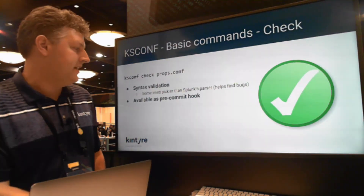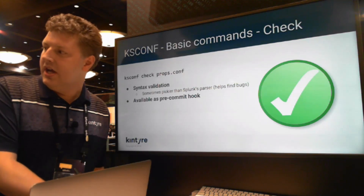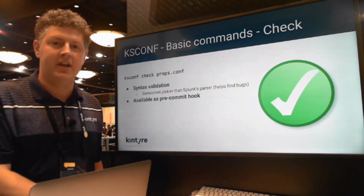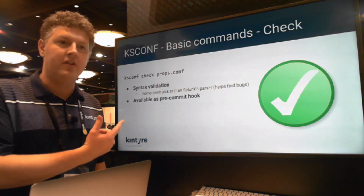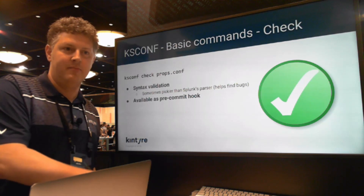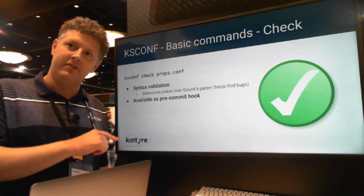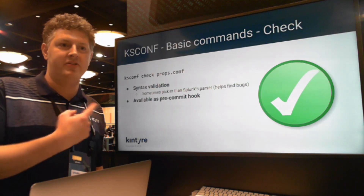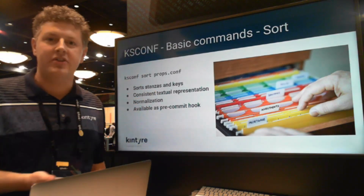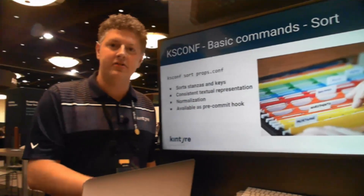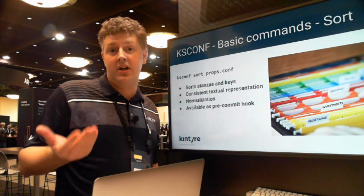We also have a basic check tool that does validation, which is pretty straightforward. The key thing is that you can use it as a pre-commit hook. It will go check all the config files you changed when you type git commit and double-check to make sure you haven't made a mistake. Because it tends to be slightly pickier than Splunk's parser, I've found it's actually caught a bunch of mistakes. We also have a sort tool — also available as a pre-commit hook — so if you want to sort your configuration files to have a standard canonical format whenever they're saved in a repository, that can be very helpful.